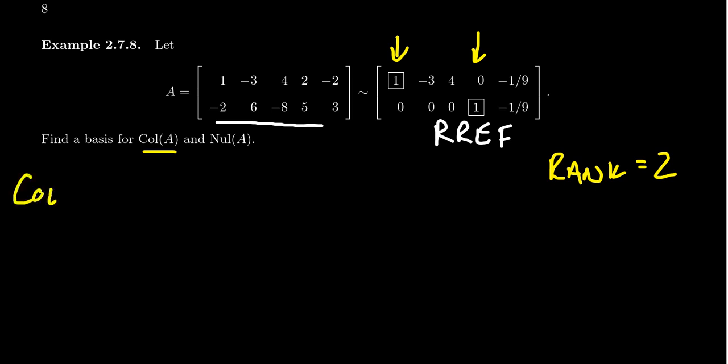So the column space, which is the span of all five columns, you only need two of the columns. And which two columns are you going to choose? You're going to choose the first column because that was a dependent variable. You get a pivot there in the matrix.